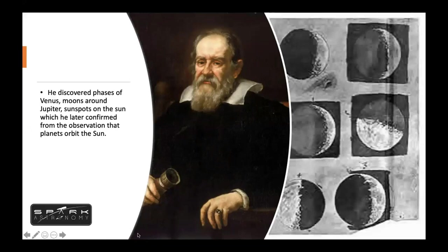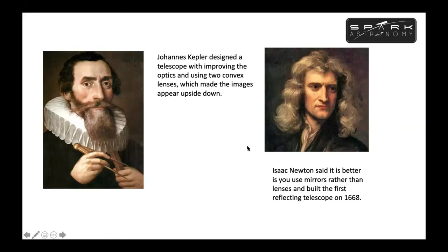Galileo was the first person to look up at the sky through a telescope, but he was never the first person to develop it. Then the picture changed and two people came up — Johannes Kepler and Isaac Newton. Johannes Kepler designed the telescope by improving the optics using two convex lenses, which made the images appear upside down. Galileo was observing through the telescope, and later made the telescope better by using mirrors.